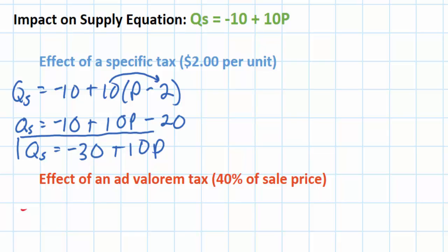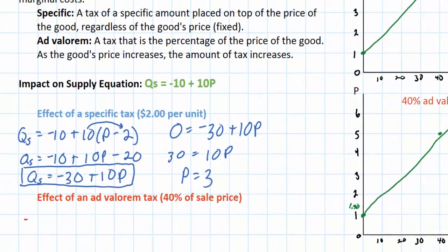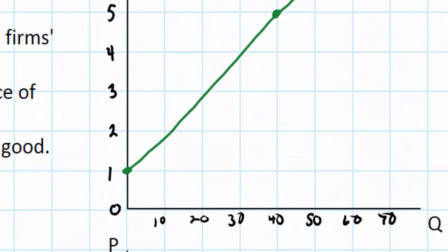So this is the new supply equation following the $2 specific tax. To graph this I must first find the P intercept. So I'll set Qs equal to 0 and solve for P. Move the 30 over here, I've got 30 equals 10P. Divide both sides by 10 and I've got the P intercept of 3. So I know my new supply curve is going to begin at a price of 3.